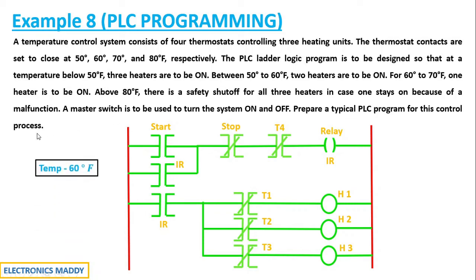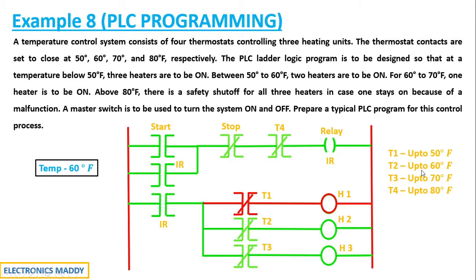Now, if the temperature is 60°F, we should have only two heaters operating. T1 will be turned off because there are only two heating units that should be on. The hierarchy shows T1 operates up to 50°F, T2 up to 60°, T3 up to 70°, and T4 up to 80°. Since T1 is now acting as an open circuit, no current flows through that path, and H1 which was previously on will be turned off.